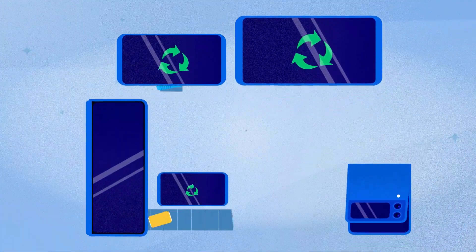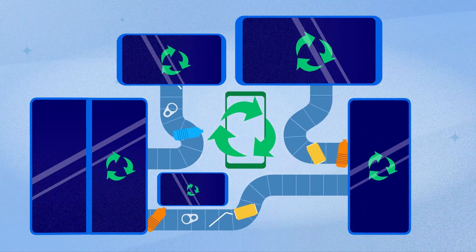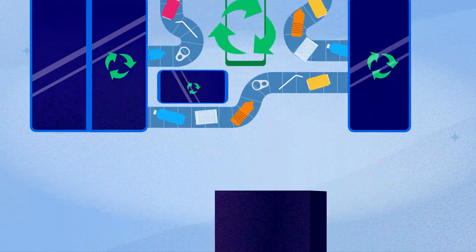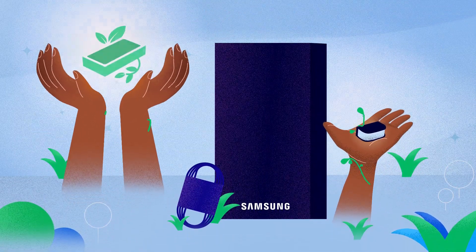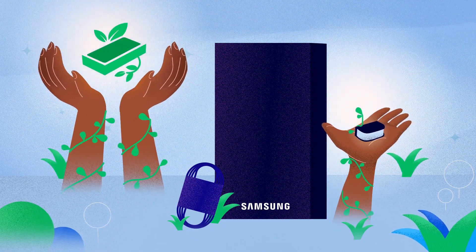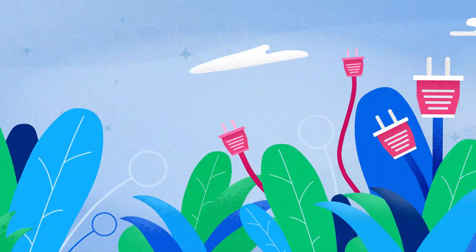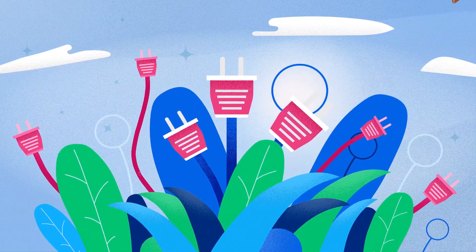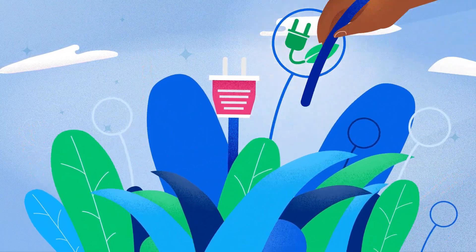First, using recycled materials in all mobile products. Second, eliminating single-use plastics in our packaging. Third, achieving zero standby power for our smartphone chargers.